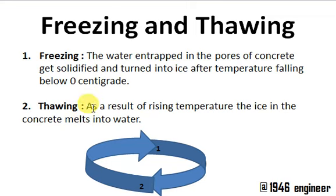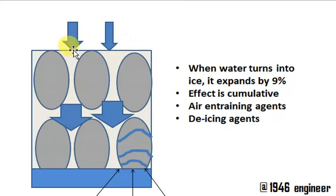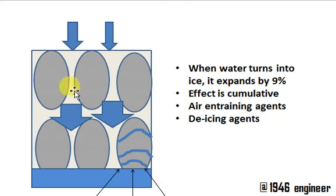Now let's look at why freezing and thawing deteriorates and reduces the strength of a concrete structure. When water turns into ice, it expands by nine percent. Consider a concrete block subjected to water during the freezing cycle where all the pores are completely occupied with water and the water has no way to escape.